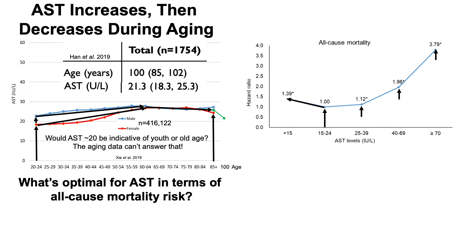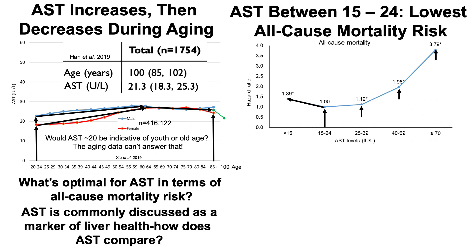These are not small increases — a 96% increase for AST 40 to 69, and almost a fourfold higher all-cause mortality risk for AST greater than 70.